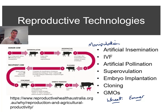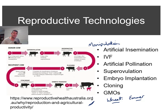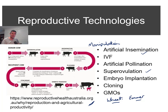There's a useful website to look at for a nice overview of what's happening in agriculture. It covers a couple of things in particular — super ovulation is one of the things that's part of this, artificial insemination is another process, and also embryo transfer and embryo implantation.